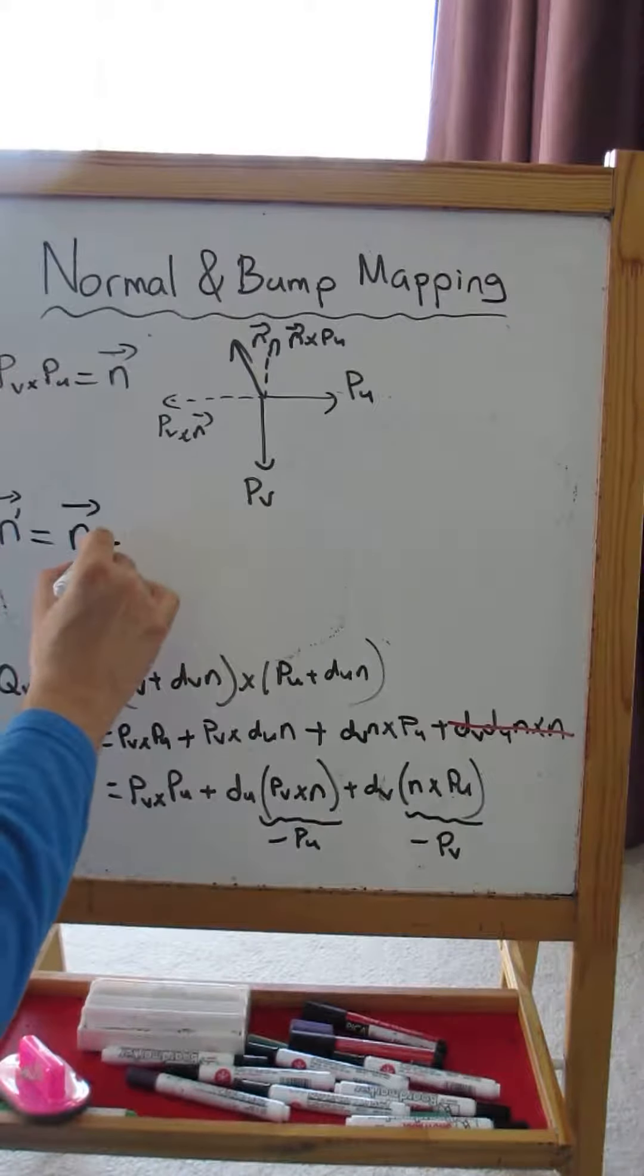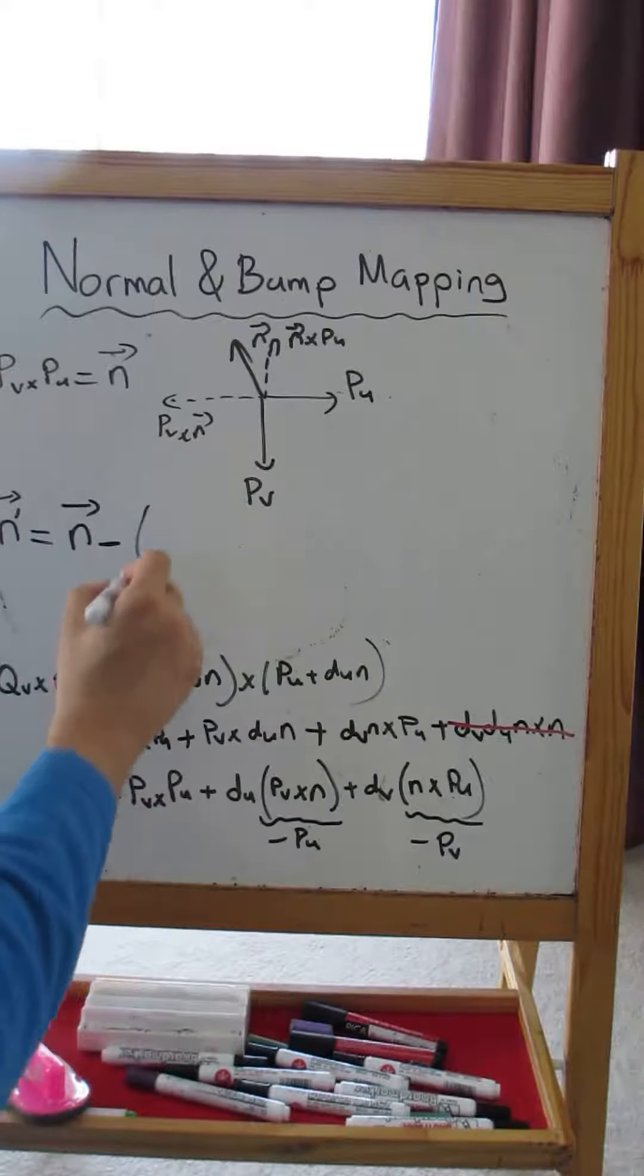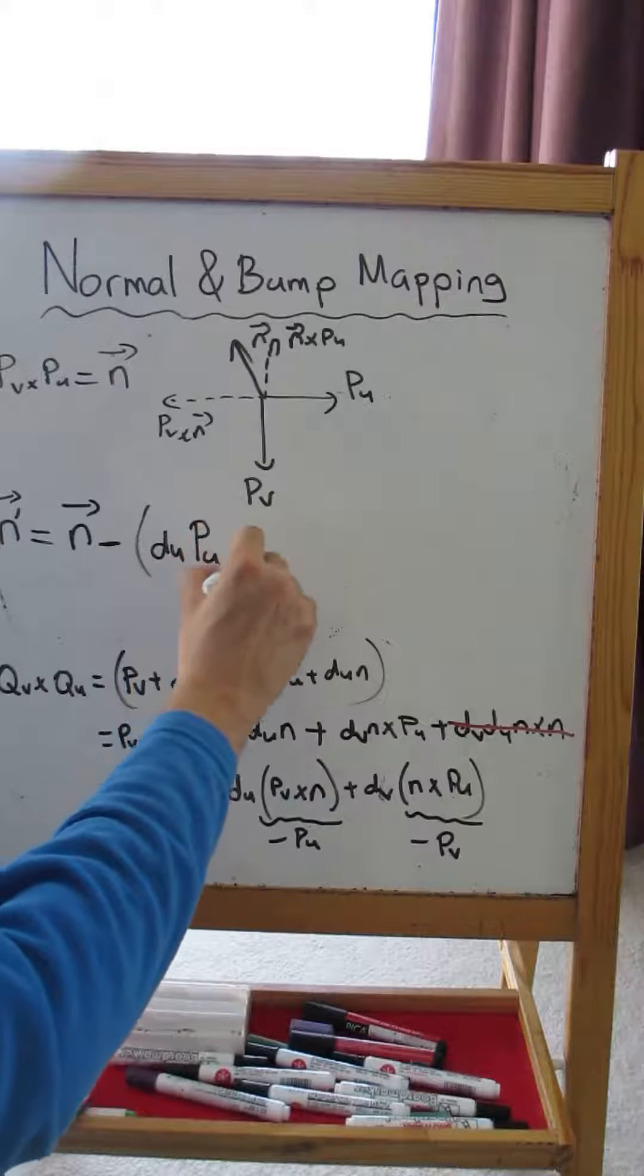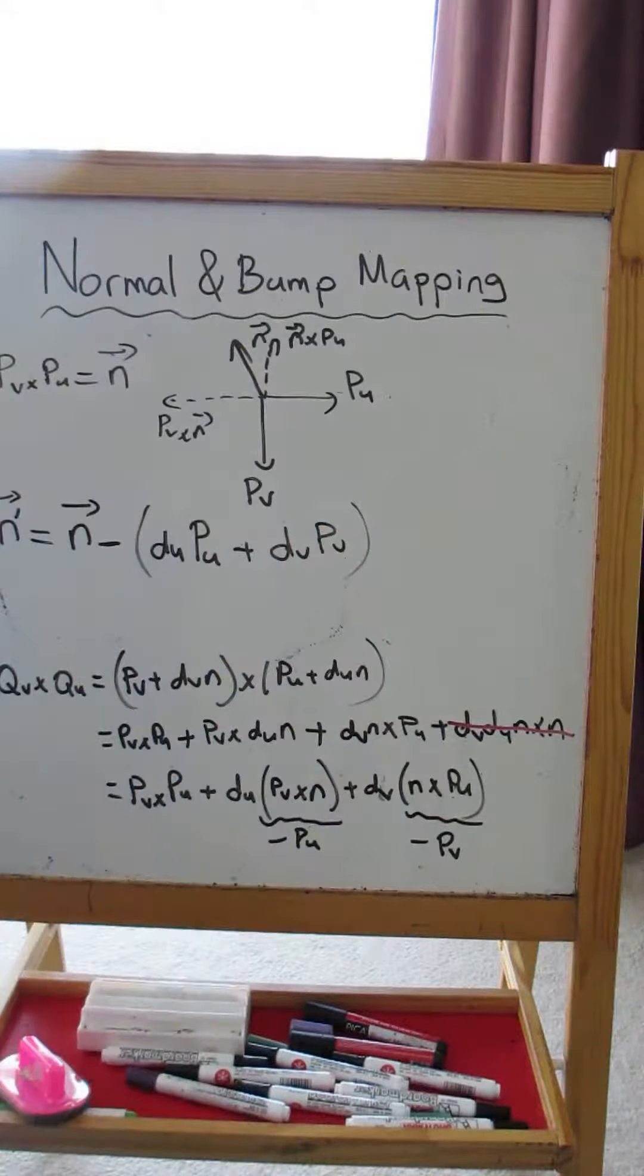minus, then we are going to have DU times PU plus DV times PV.